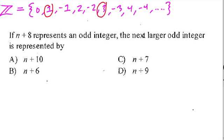So our first odd integer is represented by n plus 8, and this gives us some odd integer. So we have to assume, for example, let's pretend that n equals 1.